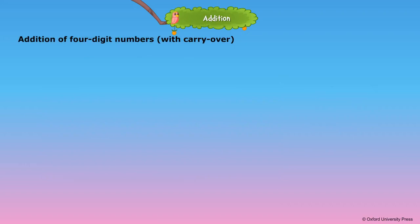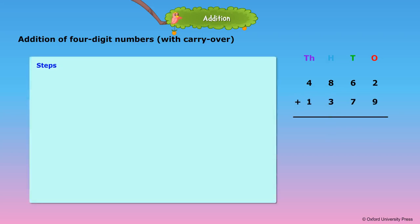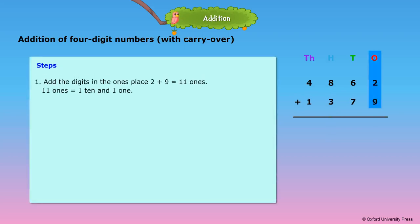Addition of 4-digit numbers with carryover. Let us add 4,862 and 1,379. Step 1: Add the digits in the ones place. 2 plus 9 is equal to 11 ones. 11 ones is equal to 1 ten and 1 one. In 11, the 1 in the ones place goes under 9 in the ones column, and the 1 ten goes over 6 in the tens place as carryover.